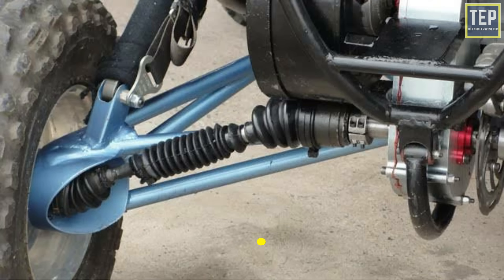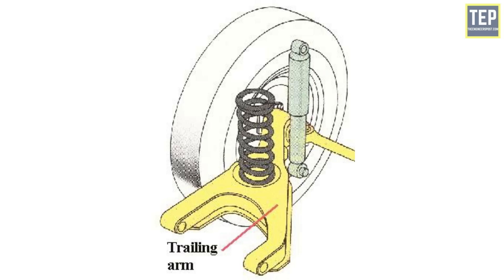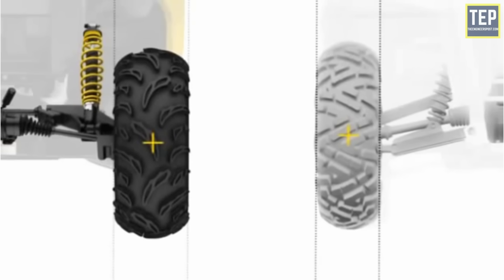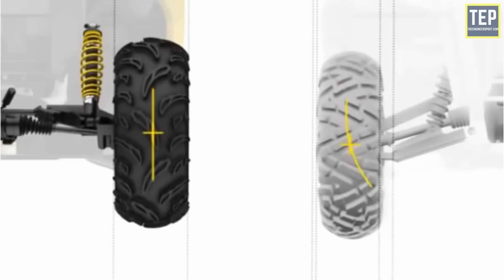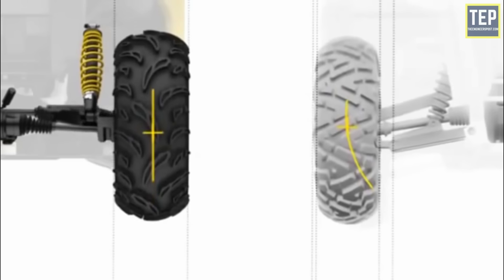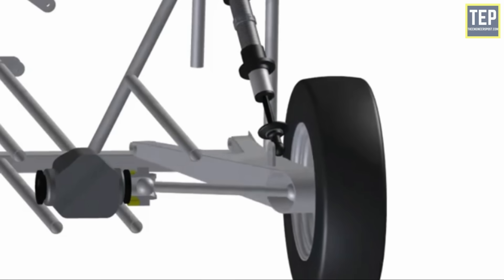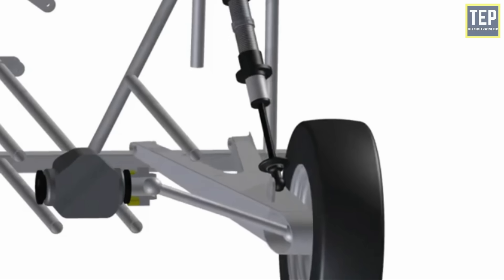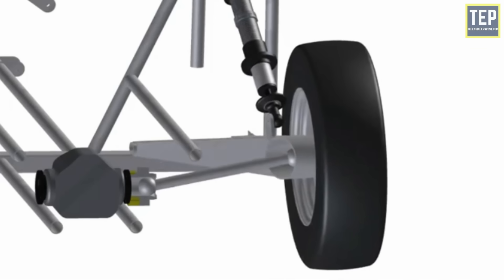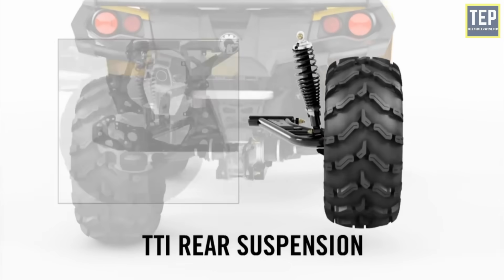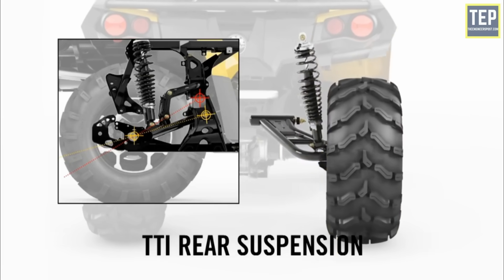Trailing arm independent suspension maintains constant track and wheel altitude with a slight change in wheelbase and caster angle. A coil spring is attached to the trailing arm, which itself is attached to the shaft carrying the wheel hub. When the wheel moves up and down, it winds and unwinds the spring. A torsion bar has also been used in certain designs in place of coil springs.